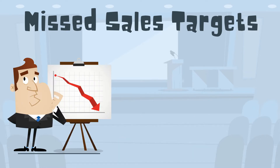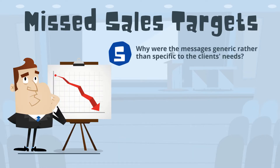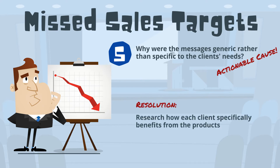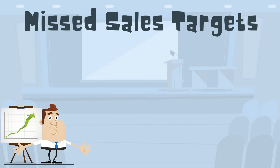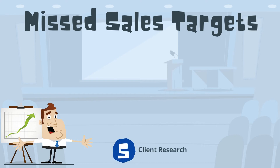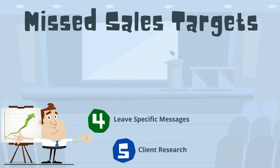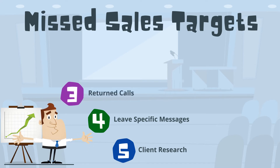In this example, the fifth why we asked leads to an actionable cause. Why were the messages generic rather than specific to the client's needs? Because he hadn't done the research on how each client benefits from his products. If the salesman does the research, he will be able to leave specific messages which will be more relevant to each client, and likely lead to more returned calls, meaning he will book more meetings and be able to reach his sales targets.